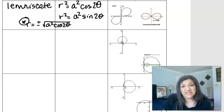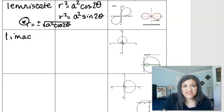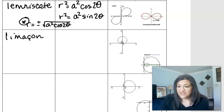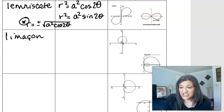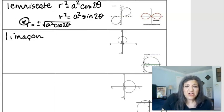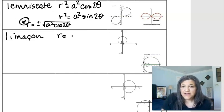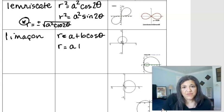So the next curve that we see with this little loop is called a limaçon. L-I-M-A-Ç-O-N. Limaçon is the pronunciation of that one. So here you're going to have r equals a plus b cosine theta.